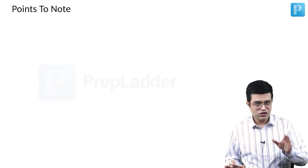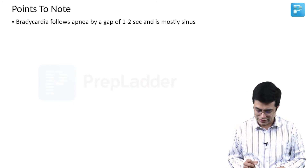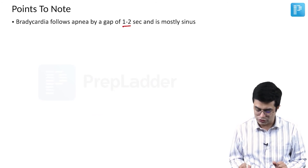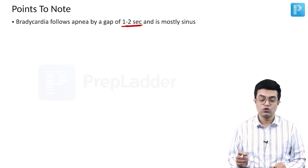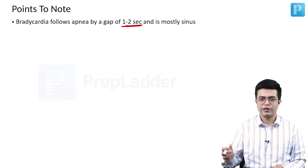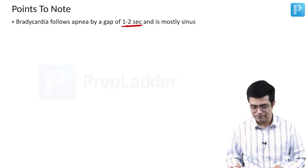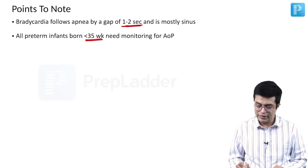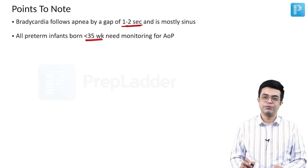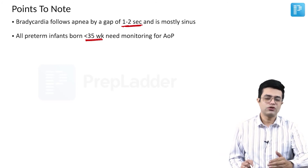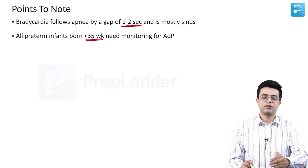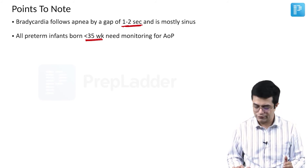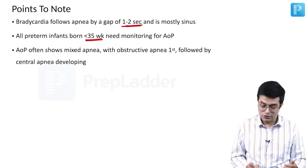Additional points to remember: whenever bradycardia occurs, it follows apnea by a gap of 1 to 2 seconds, and it is mostly a sinus bradycardia followed by AV nodal bradycardia. All preterm infants born less than 35 weeks require monitoring for AOP. So if asked what age group requires monitoring for AOP, the answer is all preterm newborns less than 35 weeks.